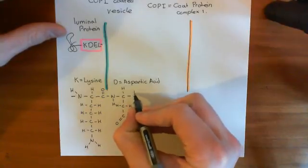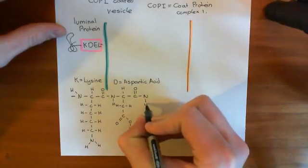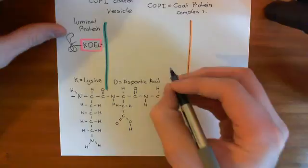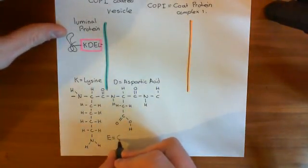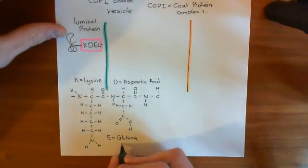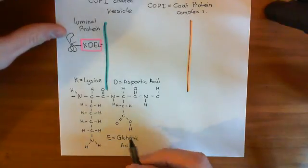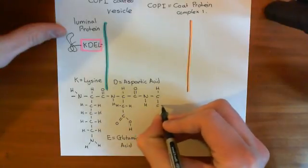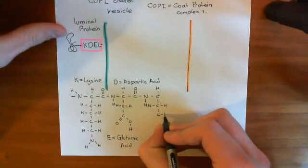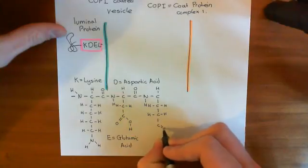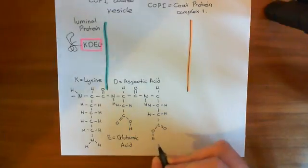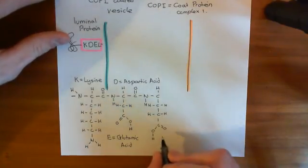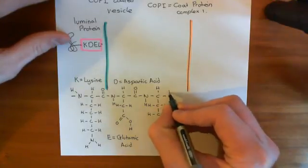Then you have the carboxyl group of the aspartic acid residue, bound in a peptide link to the amino group of the next amino acid, which is E, standing for glutamic acid. The same distinction applies: glutamic acid is the molecule with its proton still attached, and glutamate is the conjugate base once that terminal proton is lost. Here's the R group of glutamic acid — it has three carbons and then a carboxylic acid group on the third carbon. Then you have the carboxyl group that forms the next peptide link.